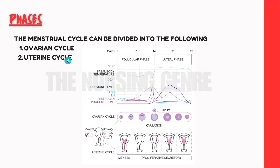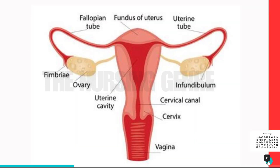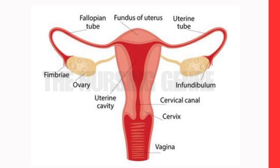The menstrual cycle can be divided into two parts: first, the ovarian cycle, and second, the uterine cycle. The ovarian cycle takes place in the ovary, and the uterine cycle takes place in the uterus.